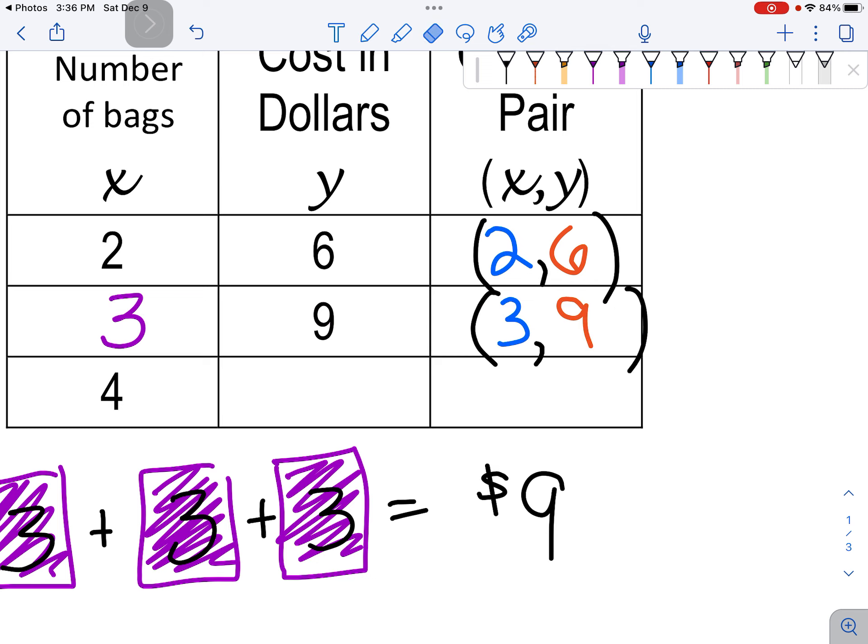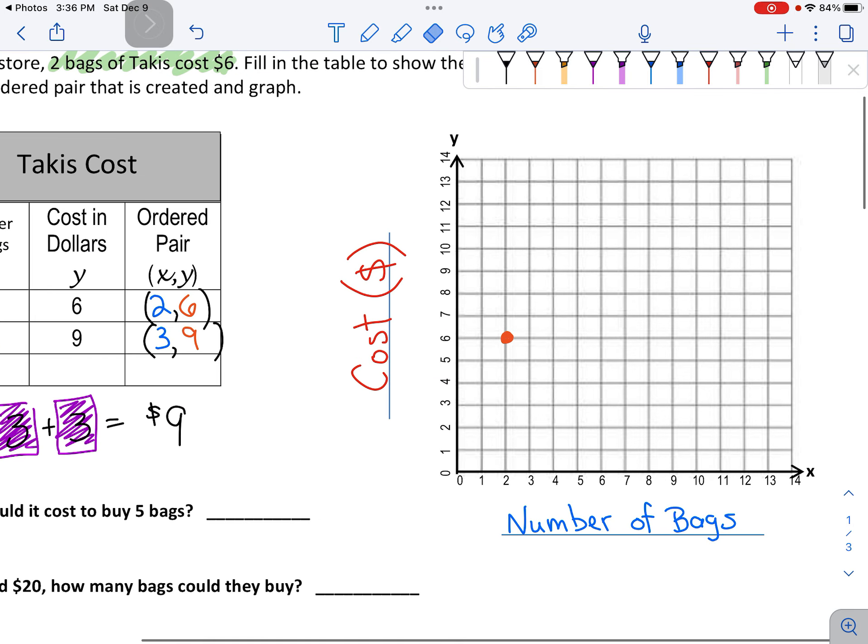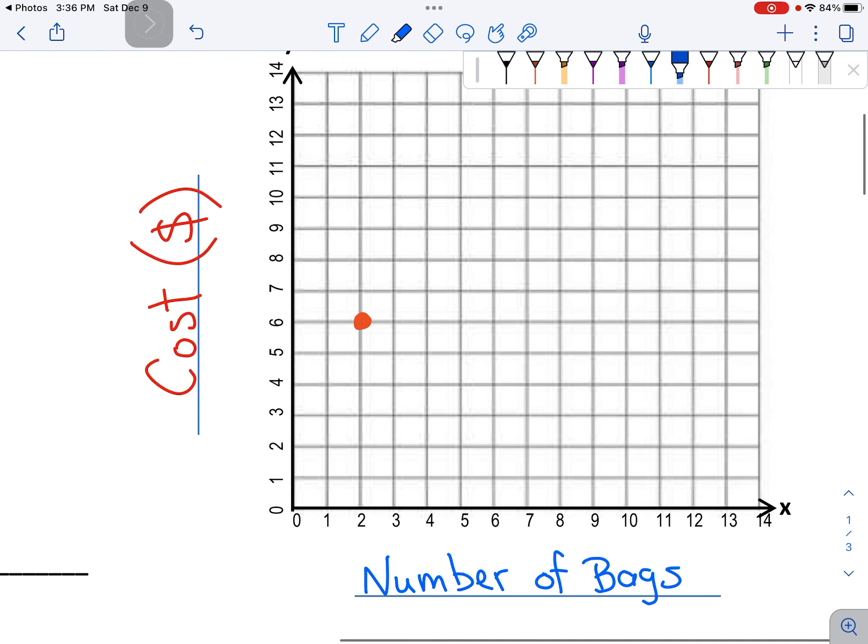And we'll put three, comma, nine into our graph. So three on the x line. Here's my x line. There's my three. So I'll go straight up from there.